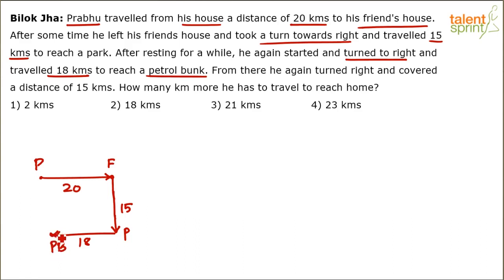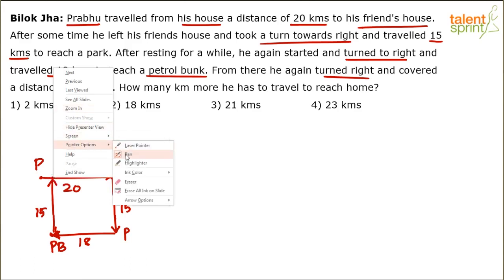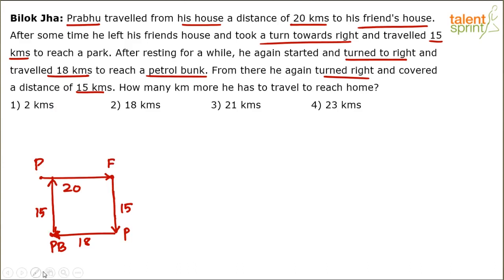From the petrol bunk, he again turned right. He was moving towards the west direction, so turning right means he is now traveling north. He covered a distance of 15 kilometers north and reached this point. Now the question is: how many kilometers more does he have to travel to reach his home? These two 15-kilometer segments are parallel lines.